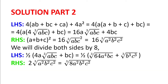Then on the left-hand side we have 4 multiplied by AB plus BC plus CA plus 4A squared, which we can rewrite as 4 multiplied by A multiplied by (A plus B plus C) plus BC, and further as 16A multiplied by the cubic root of ABC plus 4BC.